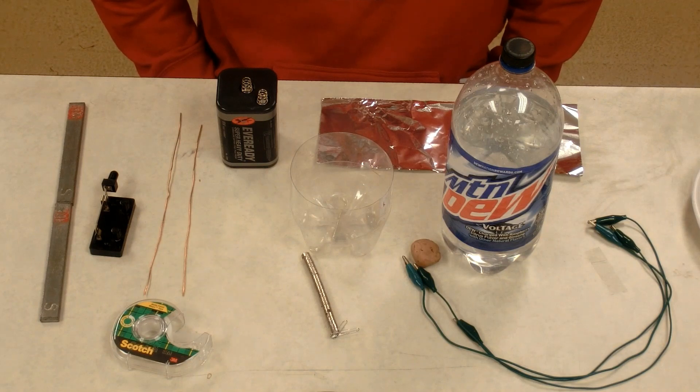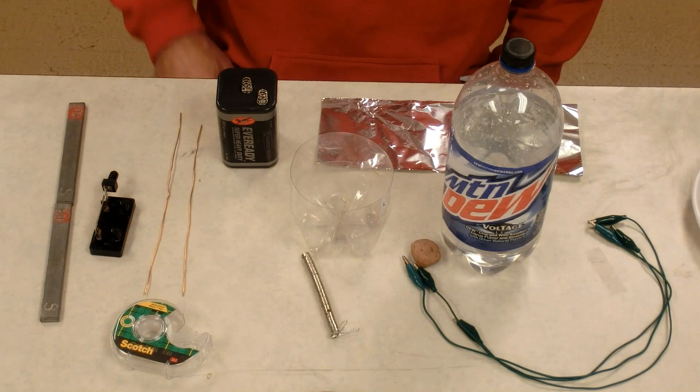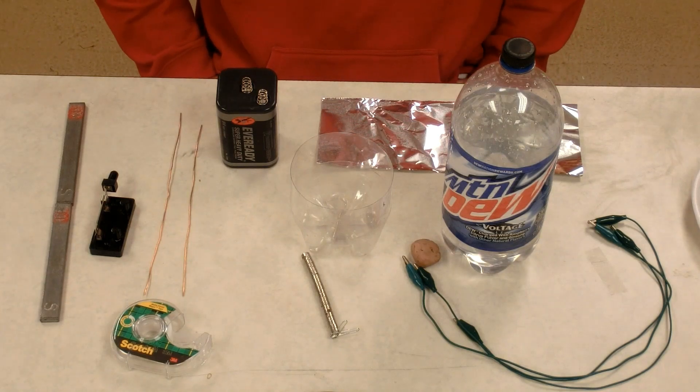In 1820, Hans Christian Oersted discovered that a magnetic field circles current-bearing wire. Knowing that a magnetic field circles current-bearing wire and magnetic fields interact with other magnetic fields, the next logical question was to ask,